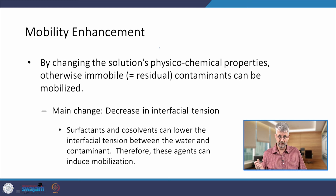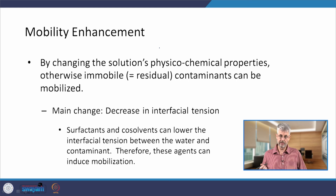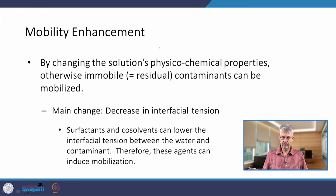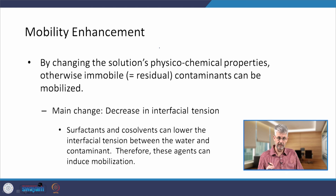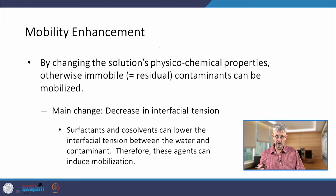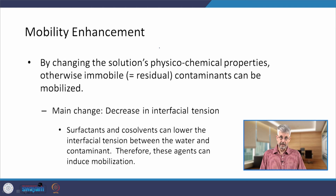A second approach is to enhance the mobility of contaminants. Here I'm talking about contaminants present at very high concentrations as residuals — residual NAPLs trapped in the pore space. For example, at a gas station where the soil is heavily discolored with oil, gasoline, or diesel, if you look into the pore space you will find small droplets of gasoline or diesel trapped in those pores. Very little you can do about it unless you increase the mobility of these tiny droplets and make them move out of the pore space to where you can actually capture them.